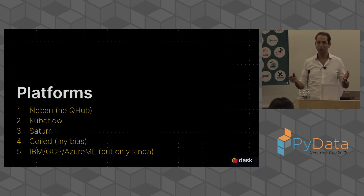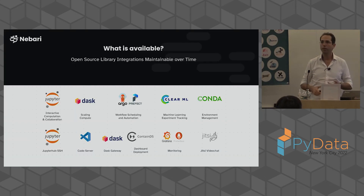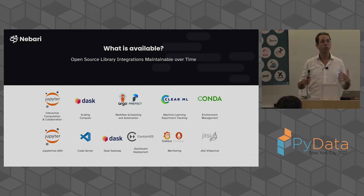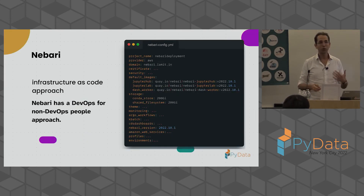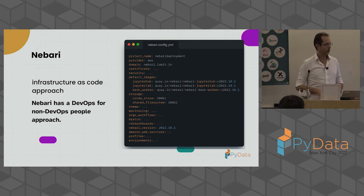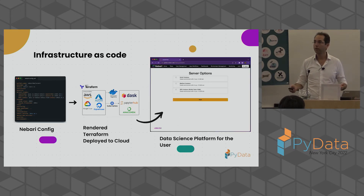QHub — it's been around for a long time, comes from QuantSight, was renamed to Nebari. It's great. It's a bundle of tools: JupyterHub, Prefect, Argo, Dask, Conda, CondaStore, Jitsi for video chat, and lots more all bundled together as a platform. It also has Dask, which is why I'm talking about it. Nebari uses infrastructure as code, or GitOps — you have a big YAML file, specify a bunch of things, they turn that into Terraform which gets deployed to your cloud of choice or an on-prem version. Nebari is doing a tutorial on Friday at 11 AM. I recommend going — it's a cool platform with lots of happy users.